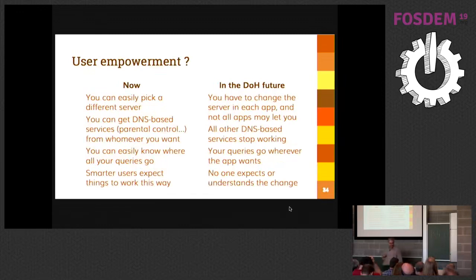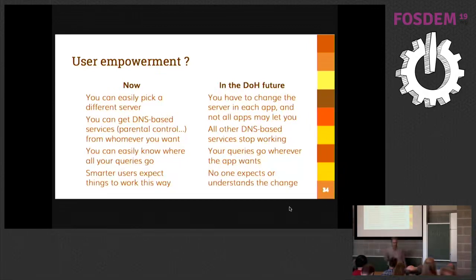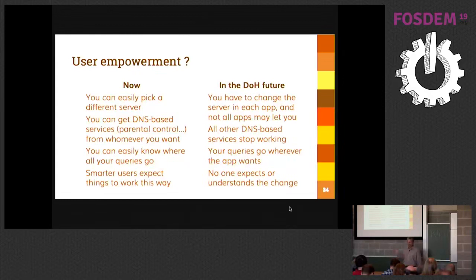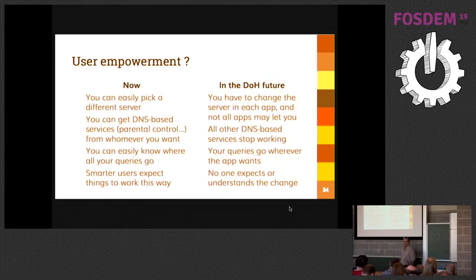On user empowerment — today you can pick a server more easily and get DNS-based services from whoever you want by just setting your DNS server to the provider of your choice. You know where your queries are going. In the future, if you have to change the server in each and every app, it will be a problem. There's not even agreement on whether all apps will let you choose the server, and any DNS-based service will stop working for applications using their own resolver. Users who've more or less learned to change their DNS will need to learn a completely different, much more complex way of controlling where DNS queries go.